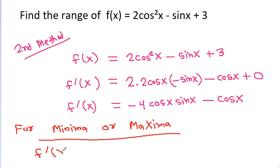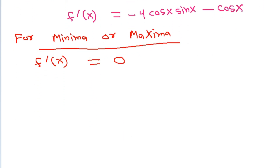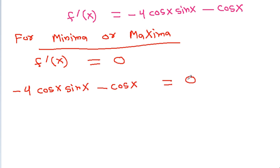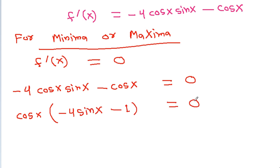Setting f'(x) = 0: -4cosx·sinx - cosx = 0. Taking cosx as a common factor gives cosx(-4sinx - 1) = 0.